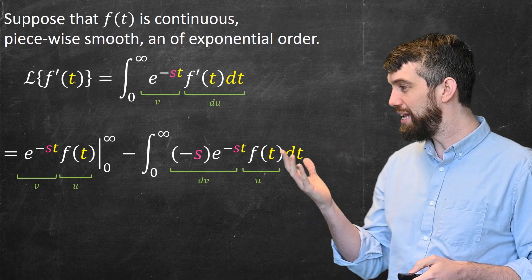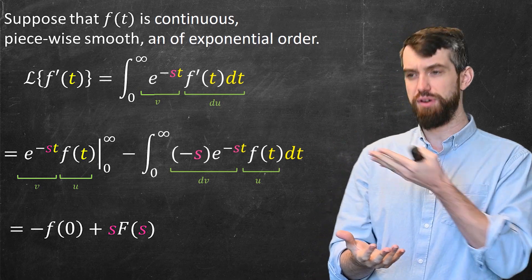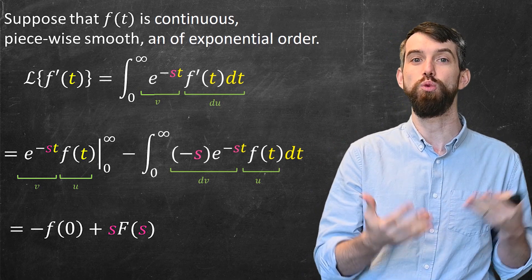As a result, what I get is just simply this. I get -f(0) for the first term. As for the integral term, I've written it down here as sF(s). Why is that?